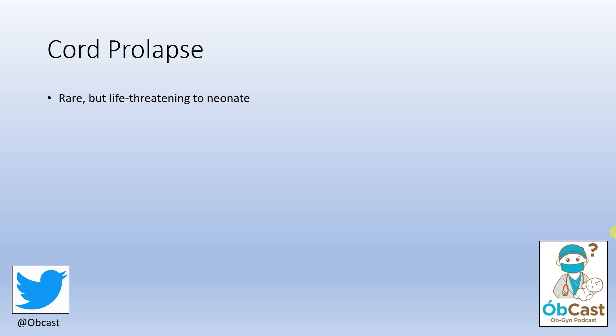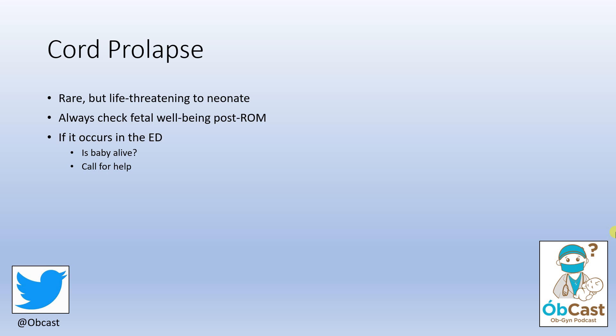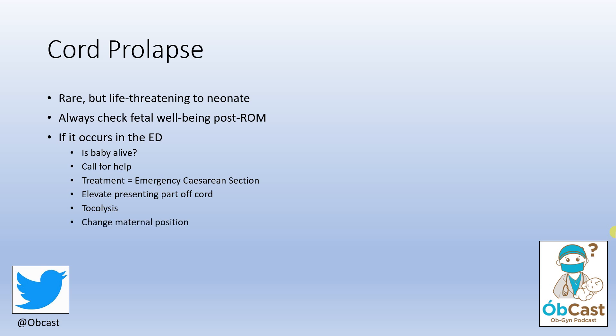In summary, cord prolapse is rare but life threatening to the baby. Always check fetal wellbeing after a woman ruptures her membranes, including if she comes to the ED by ambulance with ruptured membranes. If cord prolapse occurs in the ED: confirm if the baby is alive, call for help early, the treatment is an emergency caesarean section — make the phone call and clearly give the reason and urgency. Elevate the presenting part off the cord, consider tocolysis, change maternal position, and minimally handle the cord.